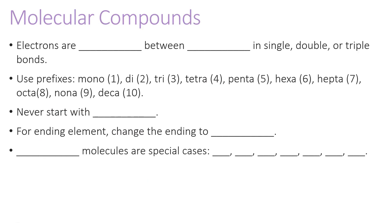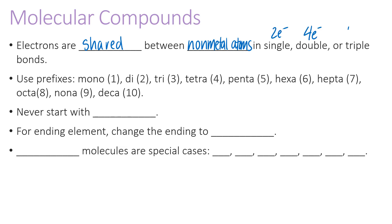Now let's discuss molecular compounds. Molecular compounds are different because electrons are shared instead of transferred, and they are shared between non-metal atoms. Non-metal atoms form molecular compounds. Those electrons can be shared in a single bond, which is two electrons; a double bond, which is four; or a triple bond, which is six electrons.